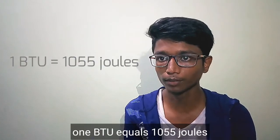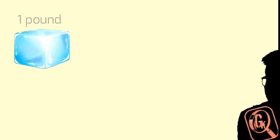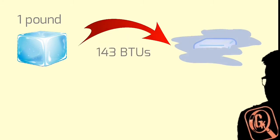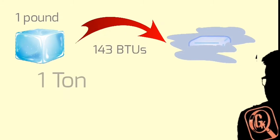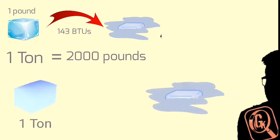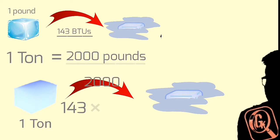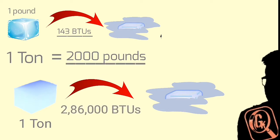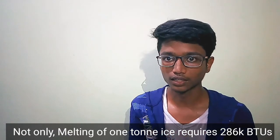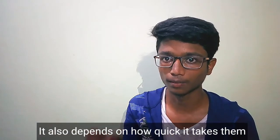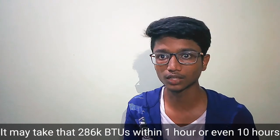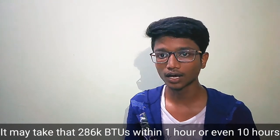BTU is British Thermal Unit. 1 BTU equals 1055 joules. 1 ton is 12,000 BTU. So 1 ton equals 12,000 BTU per hour.